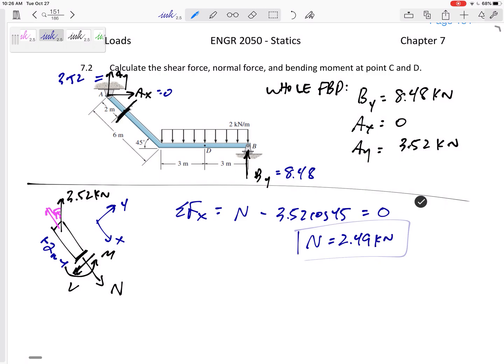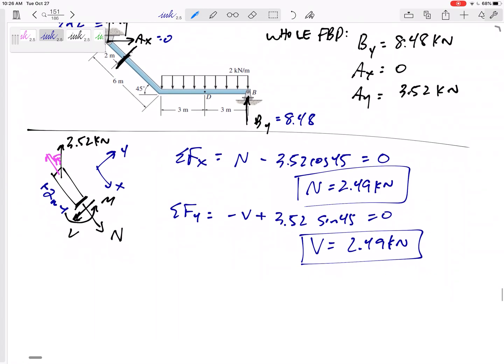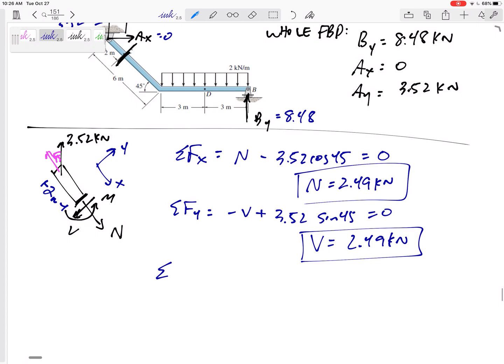It came out positive. I'm boxing that in. Summing the forces in the Y direction. I've got negative V and positive 3.52 sine 45 equals zero. V comes out to be positive 2.49. Now these usually will not come out to be the same answer. You can see why they are because the only other force is that 3.52 and it's at a 45 degree angle. So sine and cosine 45 are the same. So don't think they'll be the same.